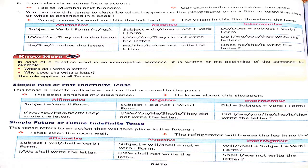Examples are also given below. For future tense: Subject + will/shall + Verb first form + Object. For negative: shall not or will not. For interrogative, the helping verbs 'will' and 'shall' come to the front first, and the rest of the sentence remains as usual.